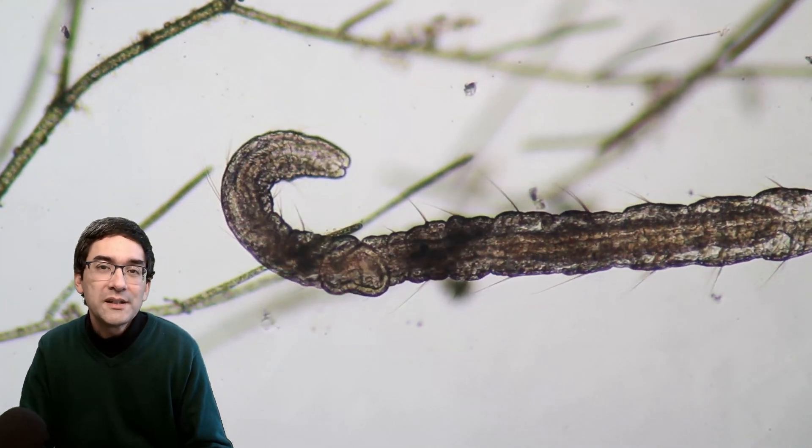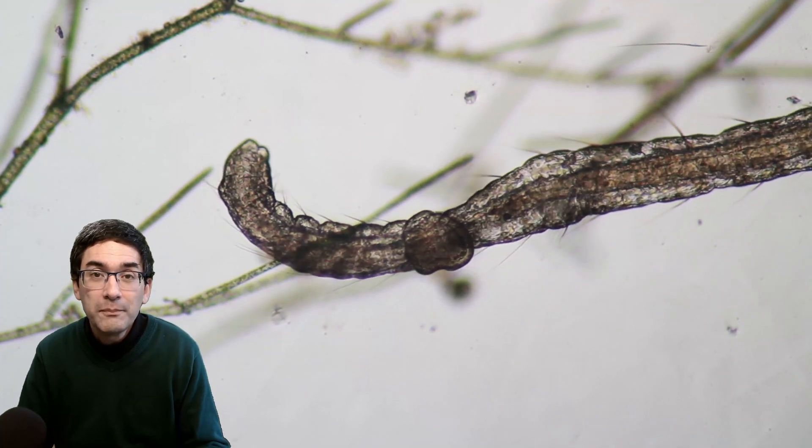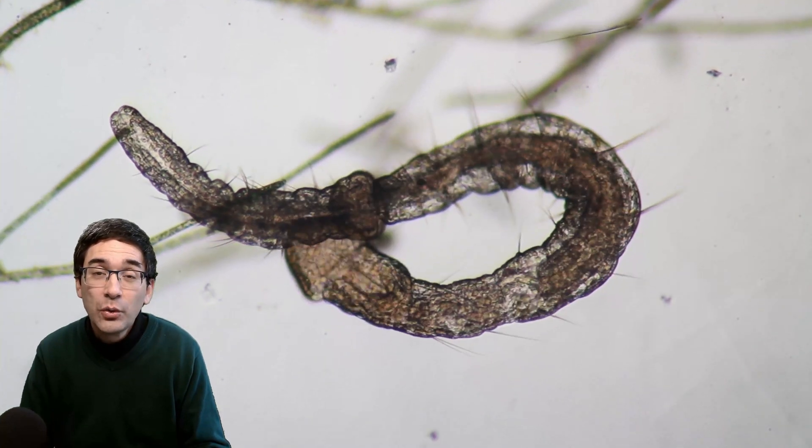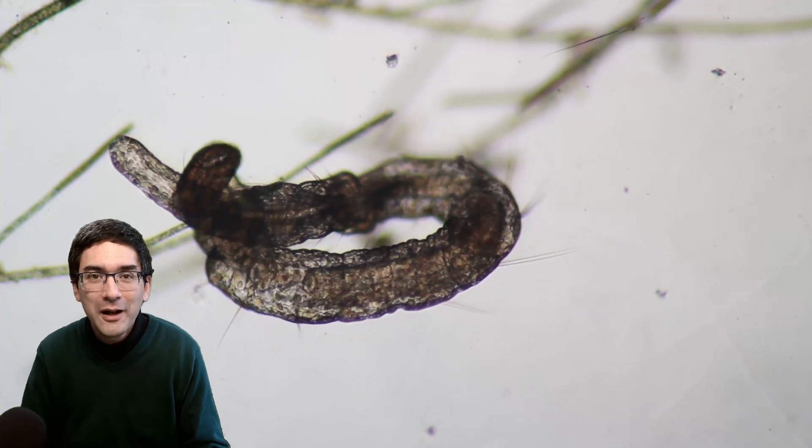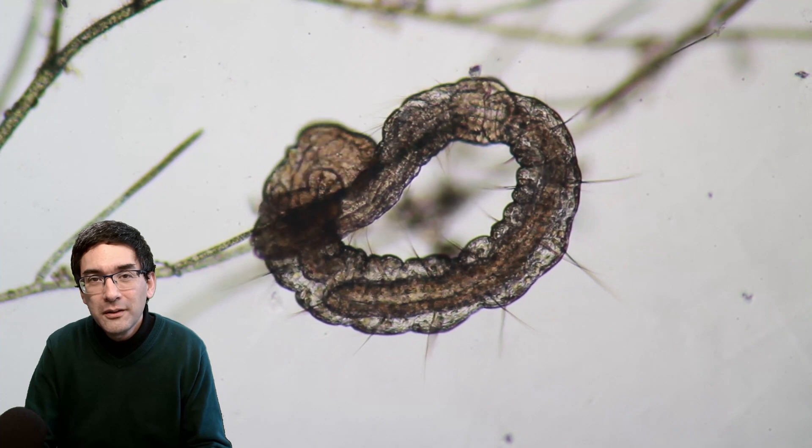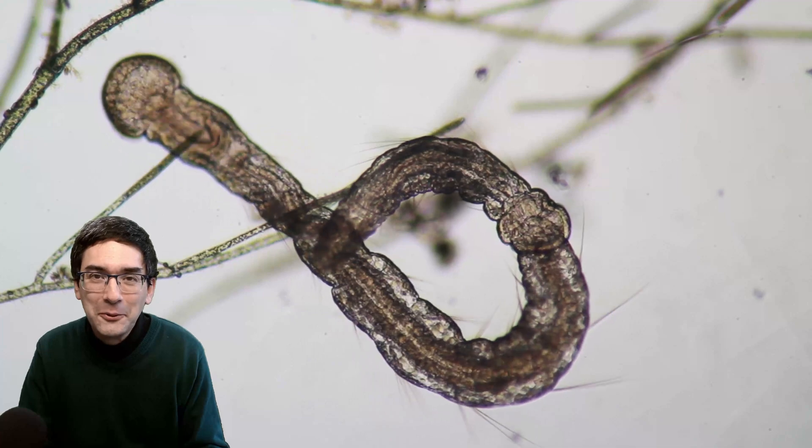When the worm has reached a certain size, it will grow a new head right in the middle, so the worm is actually going to divide in half and then you have two worms. In this way, it's able to reproduce quite quickly. That's basically what it likes to do.